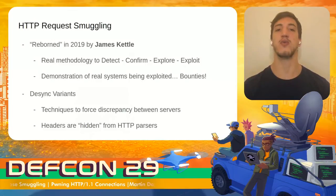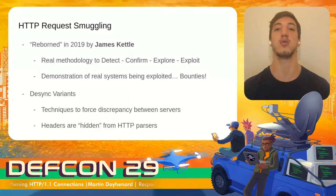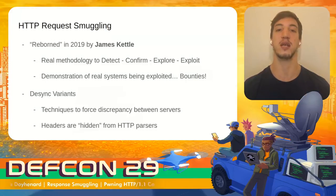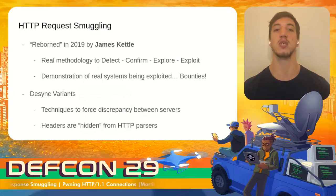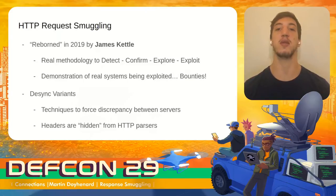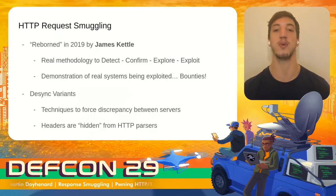These attacks were forgotten for many years as they were thought to not be usable in real systems. This changed in 2019 when James Kettle revived the idea by providing a new methodology to detect different desynchronization vulnerabilities, confirm they could be used to smuggle requests, and exploit different features of web applications. He demonstrated these techniques could be applied in many real systems, allowing collection of many bug bounties from different vendors.